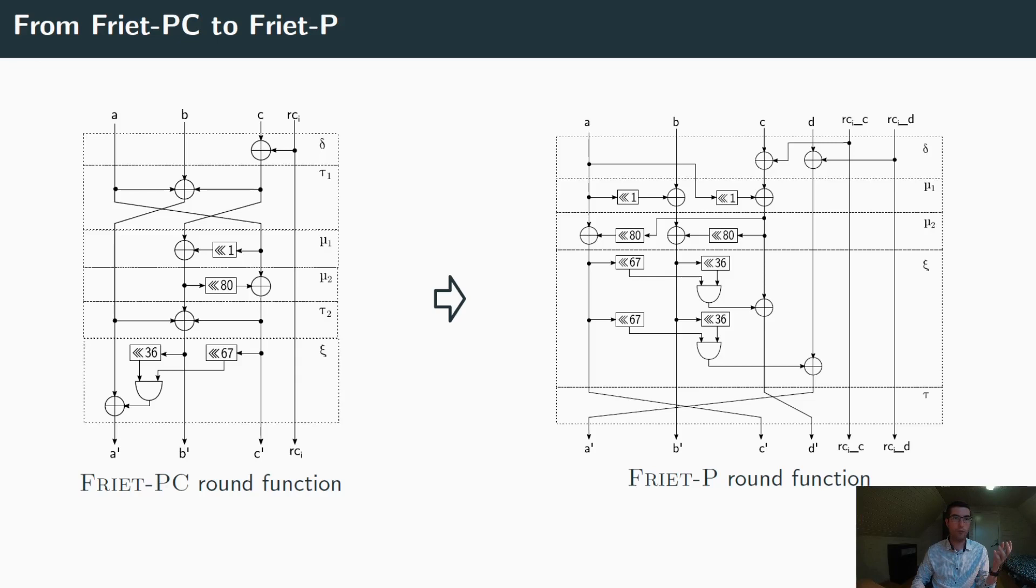What is interesting to do here is to compare the number of bitwise operations between one round of the two permutations. So you can, for example, notice that the number of circular shifts double going from four to eight, and it's also the case for the number of bitwise AND going from one to two, while the number of exclusive OR, on the other hand, remains constant and equal to eight.